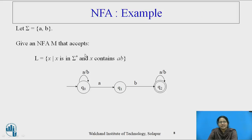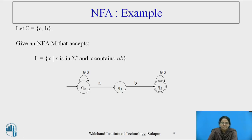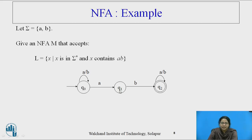Here one example of NFA is given. The alphabet set consists of A and B, and the NFA accepts strings containing AB. States are Q0, Q1, Q2. As there is no requirement to process all symbols and there may be more than 1 or 0 paths for any symbol, from Q0 there are 2 paths for A — one remains in the same state and the other goes to Q1. At Q1, there is a 0 path for A. So this NFA accepts strings containing AB.